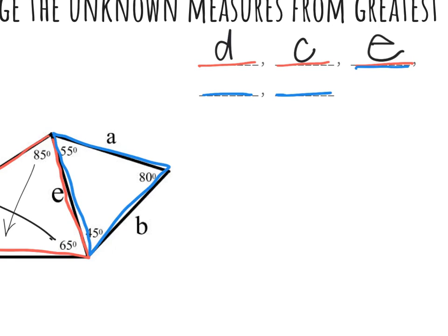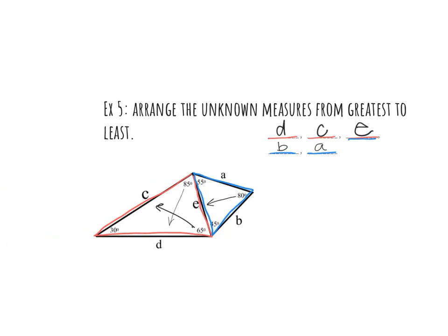Within that blue triangle then, the largest side there is E. The next largest is 55 degrees across from the side B. And then the smallest angle is across from A.